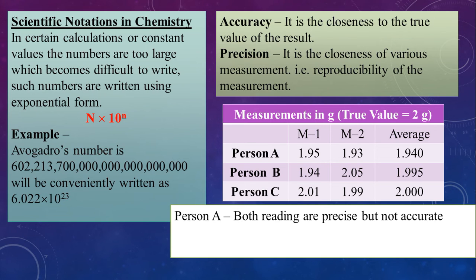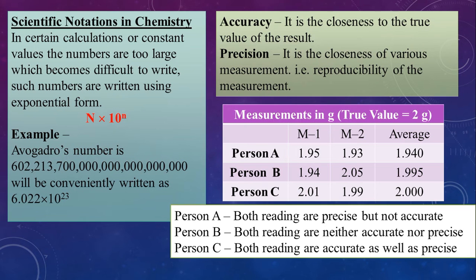What about person A's measurement? We can see the readings are precise. What was precise? Closeness of his measurement. 1.95 is similar nearby to 1.93. But, his average 1.940 is quite away from 2 gram. So, it is not accurate. Compare it with person B. His readings are 1.94 and 2.05. Average is 1.995. What can we say about precision? His both the readings are far away. So, the readings are not precise. They are not near the true value. So, we say not accurate also. Now, see the best readings person C. First reading is coming as 2.01, 1.99. Readings are quite nearby and average comes out to be exactly 2. So, the readings are accurate as well as precise.